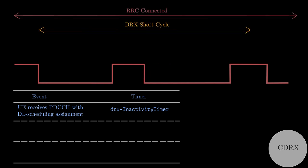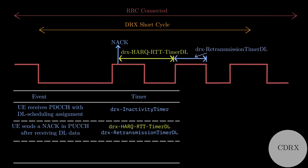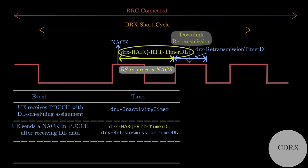Another event is when UE receives an error packet in downlink. In that case, UE sends a NACK and waits for retransmission from base station for a duration of DRX HARQ-RTT timer DL, then wakes up for a timed duration of DRX retransmission timer DL. The buffer time period DRX HARQ-RTT timer DL is for base station to process NACK and schedule a retransmission in downlink.